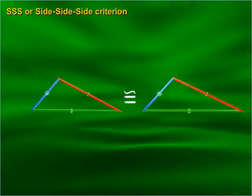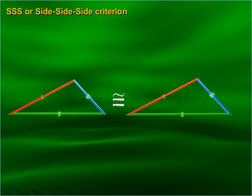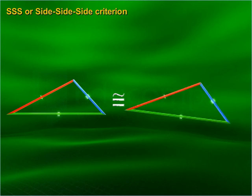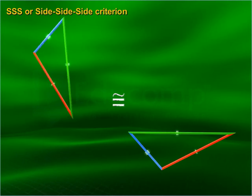SSS, or Side-Side-Side criterion: If three sides of one triangle are equal to the corresponding three sides of the other triangle, then the triangles are congruent. Triangles may remain in any position in the plane.